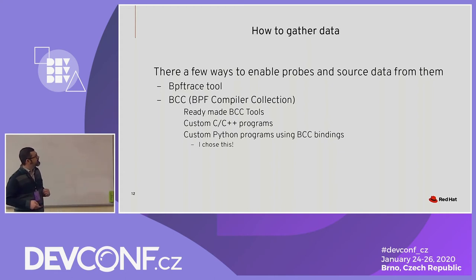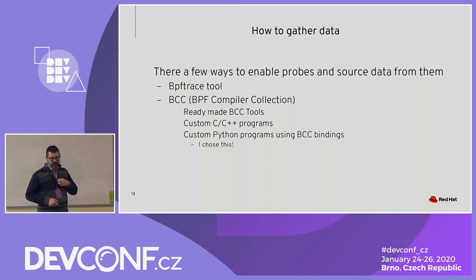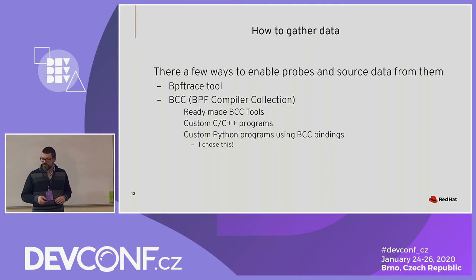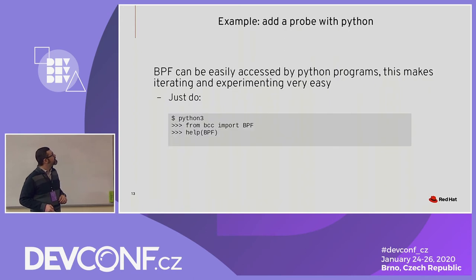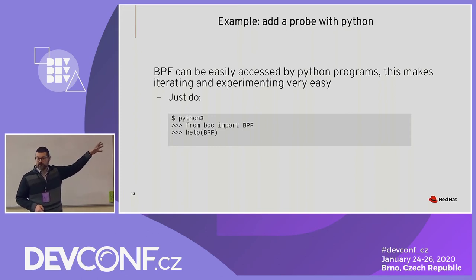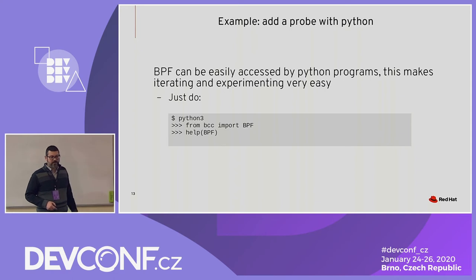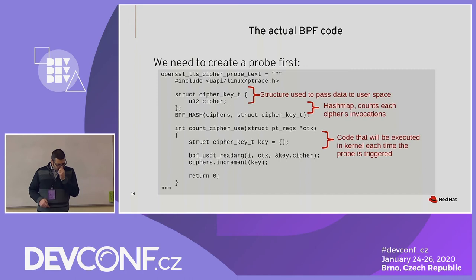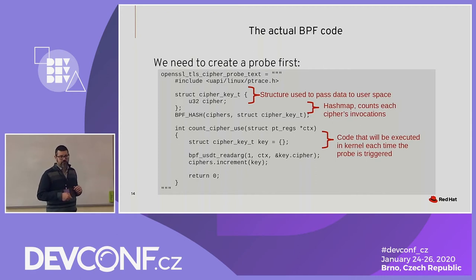So how do we gather data? There are a few ways to enable probes. One is the BPFtrace tool I used for the UProbe experiment, but you can also go deeper with BCC — the BPF Compiler Collection. It provides tools for common tasks, but you can also create a custom C program or Python program. I embedded a small C program, which then gets compiled to BPF bytecode, inside a variable in Python code.